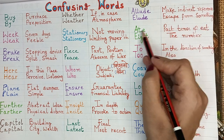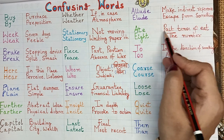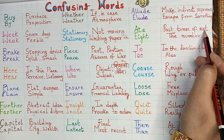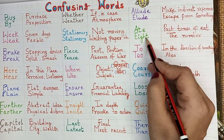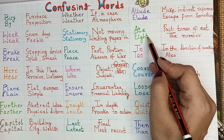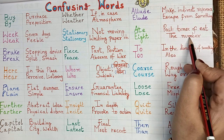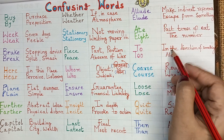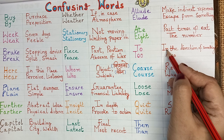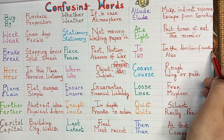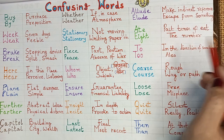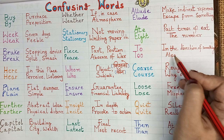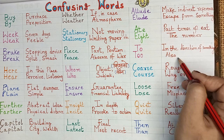A-T-E — ate means past tense of eat. E-I-G-H-T — eight means the number. T-O — to means in the direction of something. T-O-O — too denotes also.